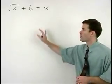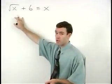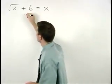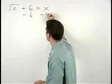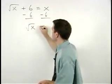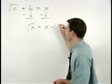We start this problem by isolating the radical on the left side of the equation. So subtracting 6 from both sides, we have the square root of x equals x minus 6.